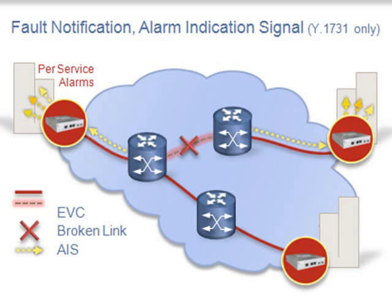Y.1731 supports customer-facing fault notification through Ethernet Alarm Indication Signals, or AIS, based on the standards originally defined in the ATM protocol. AIS messages are broadcast by nodes on either side of a fault towards the service endpoints, which then replicates the alarm for all services affected. To ensure that a failure state is maintained, AIS messages are sent periodically until the service is restored.